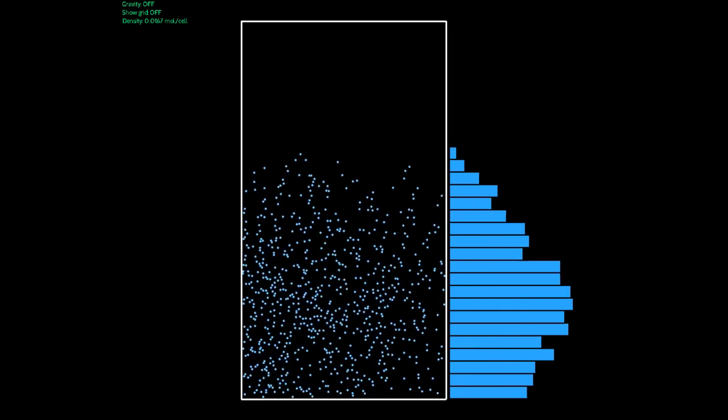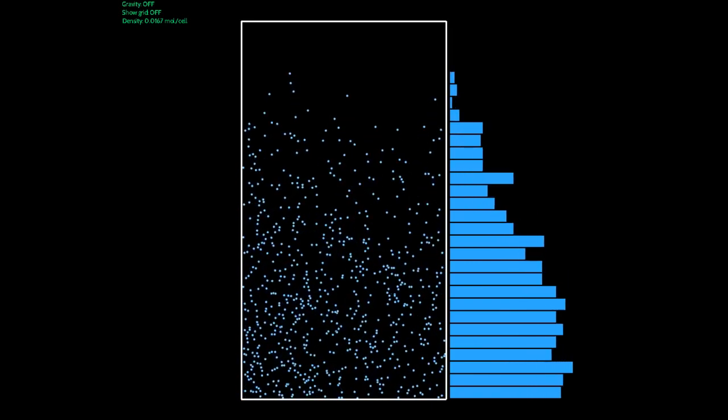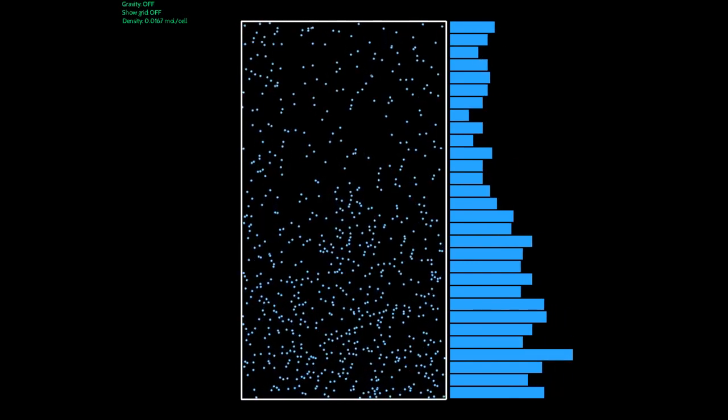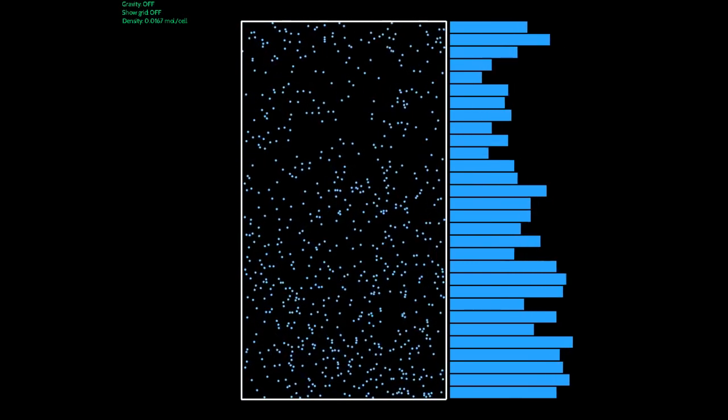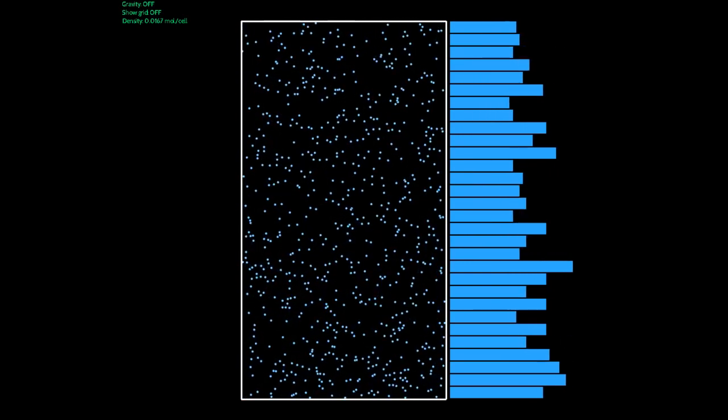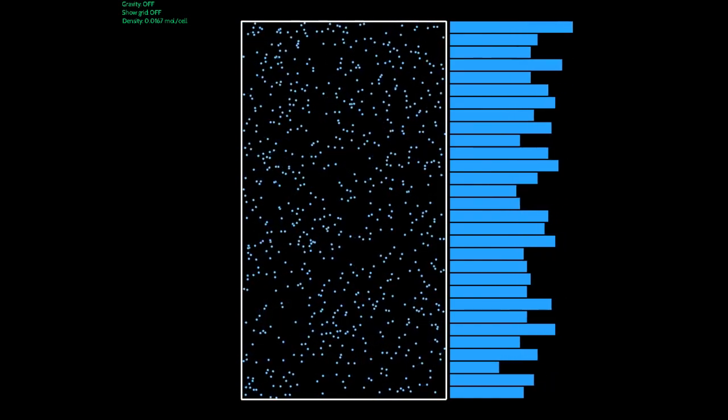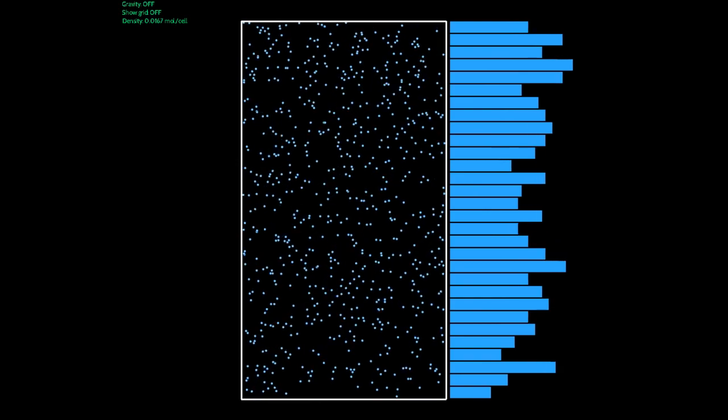So now simulating a gas with a lot of molecules. The first thing you can notice is that the gas immediately occupies the entire container. This is due to diffusion. On the right side you see blue bars. These bars show a histogram of the height of the gas molecules. The bigger a bar is, the more molecules are in this area.